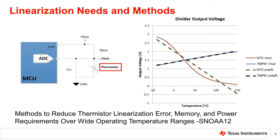In this voltage divider example, the operating temperature is from negative 40 degrees Celsius to 150 degrees Celsius. Notice how the linearity of the thermistor affects its linearization error. More details can be found in the application note titled Methods to Reduce Thermistor Linearization Error, Memory, and Power Requirements Over Wide Operating Temperature Ranges. This document can be found on TI.com.